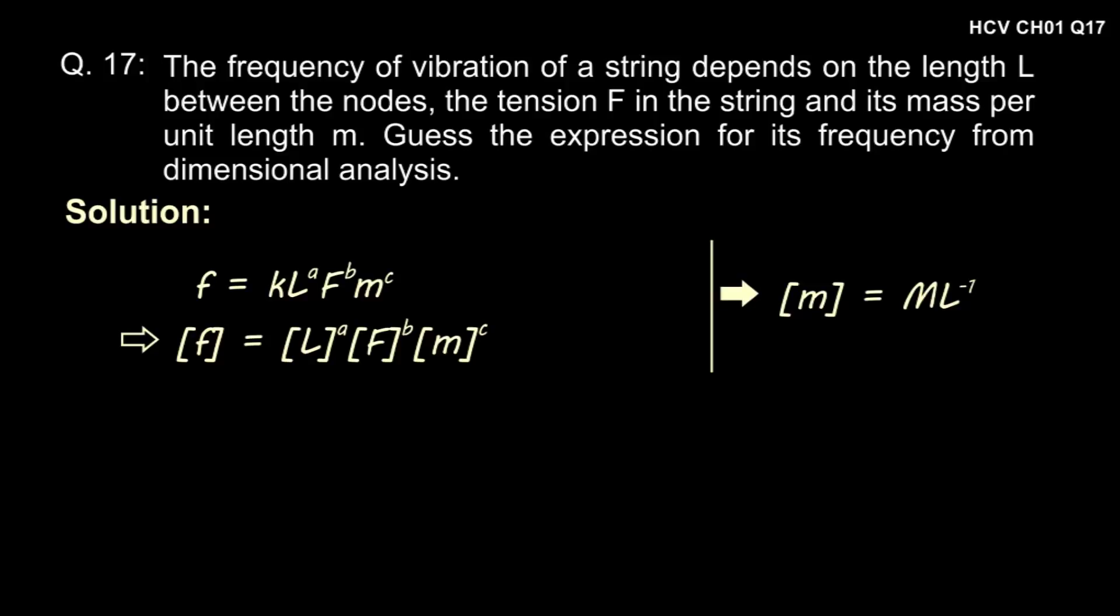We know the dimension of M, that is mass per unit length, is M L to the power minus 1, and dimension of force is M L T to the power minus 2, and dimension of frequency is T to the power minus 1.